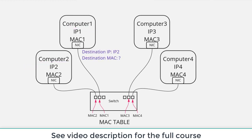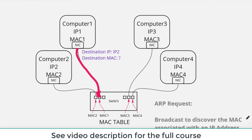This is a problem because computers in a local area network communicate using MAC addresses — they have to know each other's MAC address in order to communicate. So computer one is going to generate a request called an ARP request sent to the switch, and the ARP request is a broadcast.